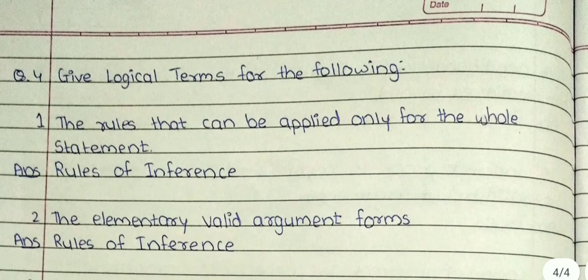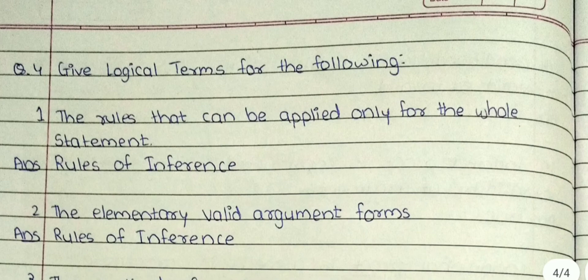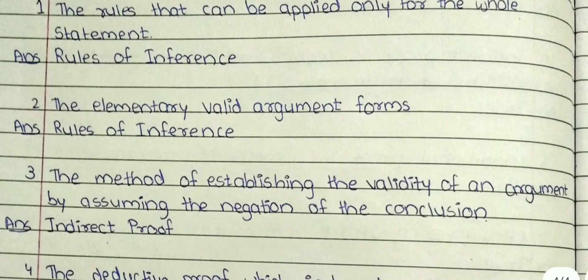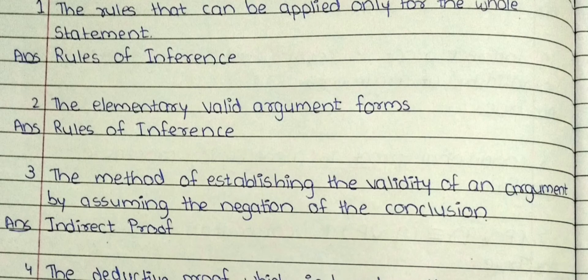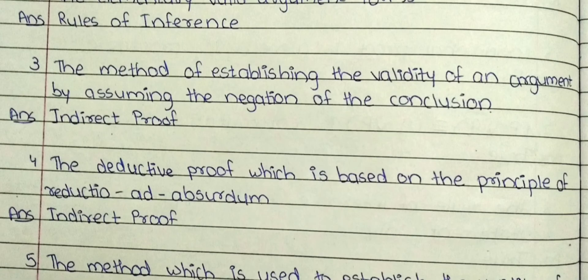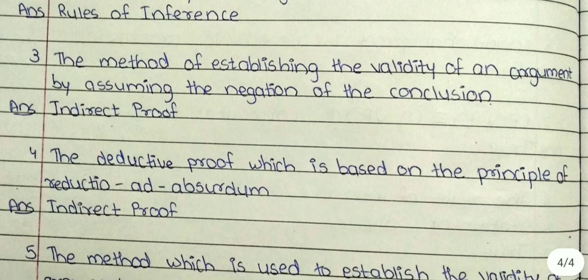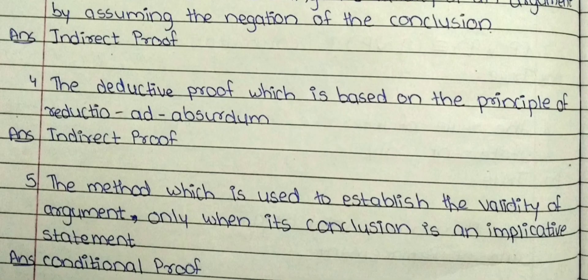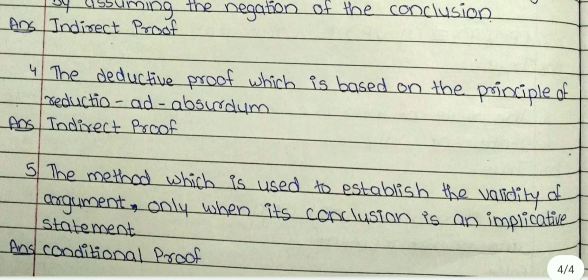Question number 4. Give logical terms for the following. First: the rules that can be applied only for the whole statement — the answer is rules of inference. Second: the elementary valid argument forms — the answer is rules of inference. Third: the method of establishing the validity of an argument by assuming the negation of the conclusion — the answer is indirect proof. Fourth: the deductive proof which is based on the principle of reductio ad absurdum — the answer is indirect proof. Fifth: the method which is used to establish the validity of an argument only when its conclusion is an implicative statement — the answer is conditional proof.